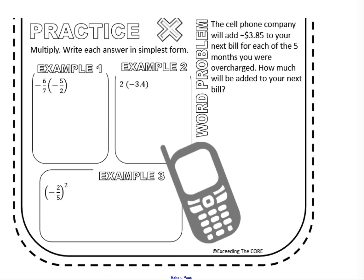Let's do a little practice. For our first example, we have two fractions multiplying together: negative 6 sevenths and negative 5 halves. With multiplication, I'm going to rewrite it with the signs in the numerator — I find that a little easier to see. Negative 6 sevenths times negative 5 halves. With fractions, you multiply straight across. Negative 6 times negative 5: 6 times 5 is 30, and same signs means the answer is positive 30. 7 times 2 is 14.